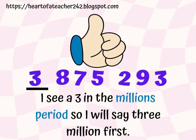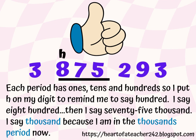Here I have a number displayed and the first thing I focus on is the millions period. I see a three in the millions period, so I will say three million first. I use a little h to write on top of the digit where I will say 100. I remind the kids that each period has ones, tens, and hundreds, so I put h on my digit to remind me to say 100. I say 800.